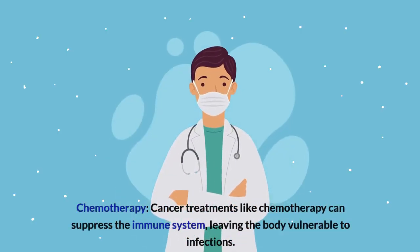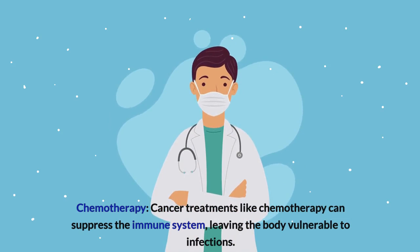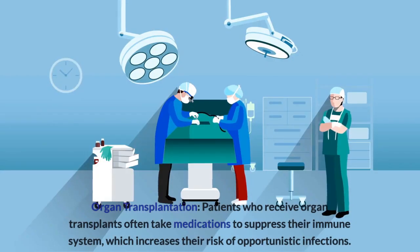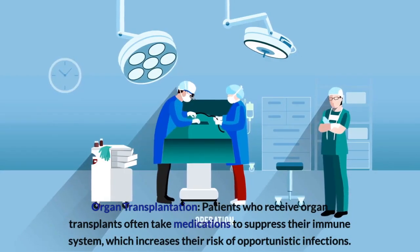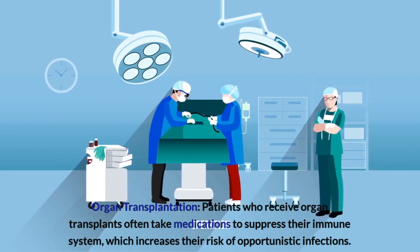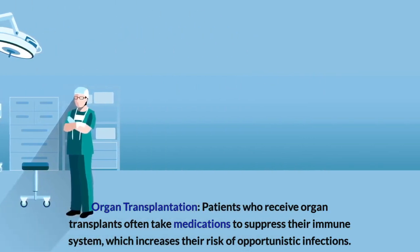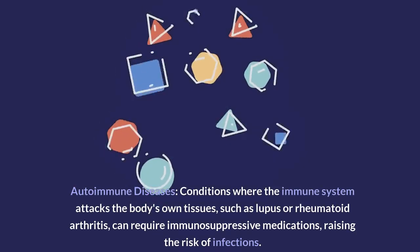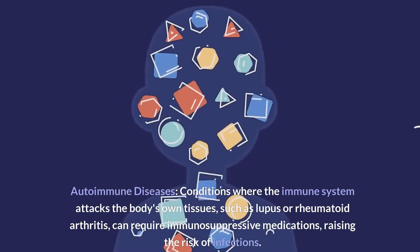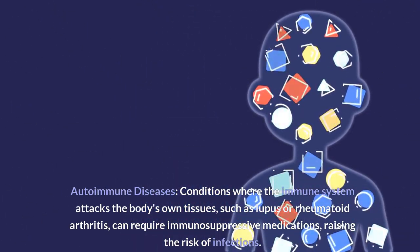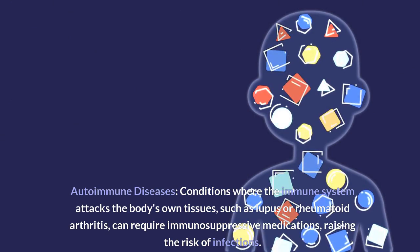Chemotherapy: cancer treatments like chemotherapy can suppress the immune system, leaving the body vulnerable to infections. Organ transplantation: patients who receive organ transplants often take medications to suppress their immune system, which increases their risk of opportunistic infections. Autoimmune diseases: conditions where the immune system attacks the body's own tissues, such as lupus or rheumatoid arthritis, can require immunosuppressive medications, raising the risk of infections.